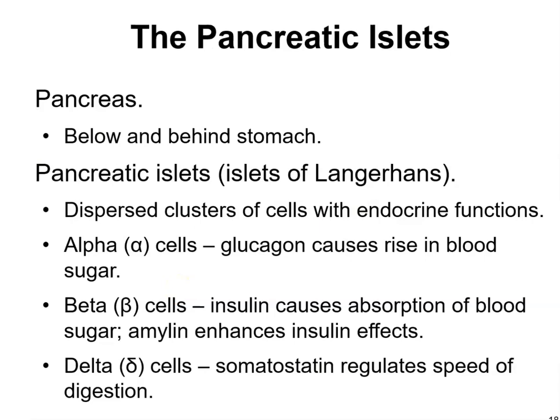The pancreas contains pancreatic islets — the islets of Langerhans — which are dispersed clusters of cells with endocrine functions. Alpha cells secrete glucagon, which causes a rise in blood sugar. Beta cells secrete insulin, which causes absorption of blood sugar; amylin enhances insulin's effects. Delta cells secrete somatostatin, which regulates the speed of digestion. Make sure you know these cell types found in the islets of Langerhans.